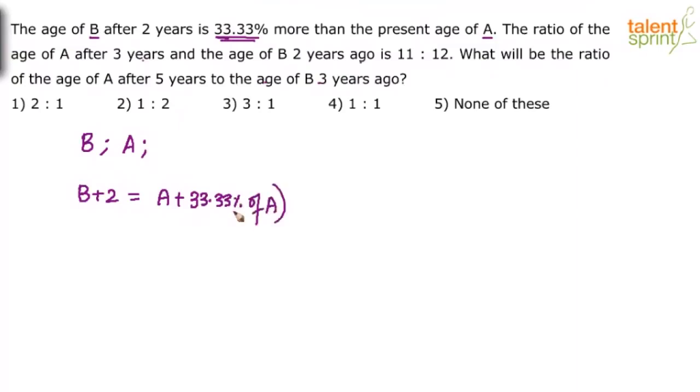But as we have seen in the previous questions as well, it is always better to convert these percentages to fractions. It will make the equation simple. So instead of taking it as 33.33% of A, let us take it as 1 third of A. Because 33.33 is 1 by 3. So simplify what do we get? B plus 2 equals to A plus A by 3. A plus A by 3 is how much? 4A by 3. That is one equation we have.